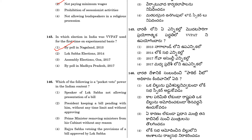Question 146: Which of the following is a pocket veto power in the Indian context? The answer is the President keeping a bill pending with him without any time limit and without approving it.